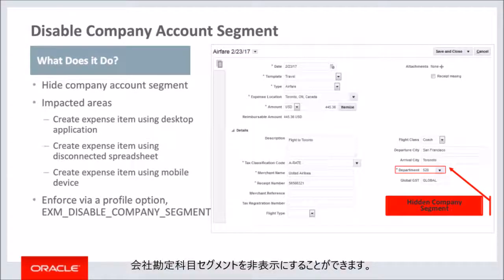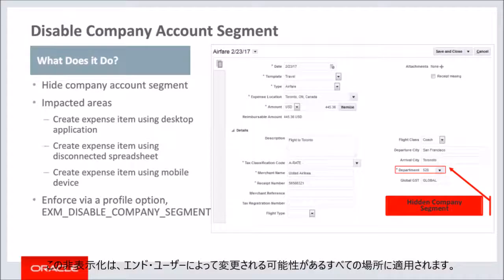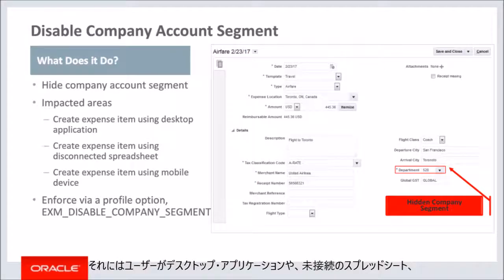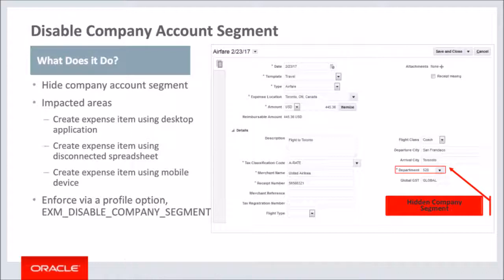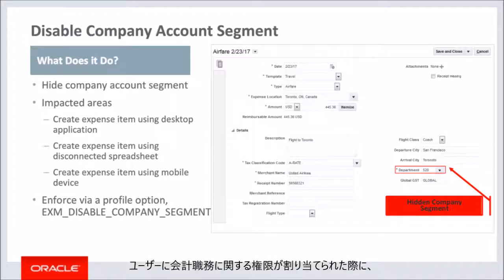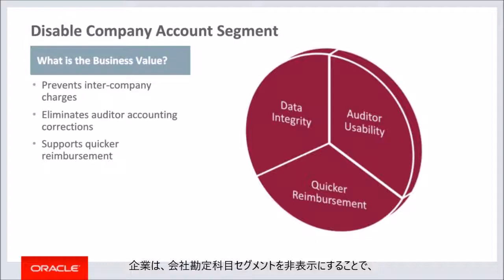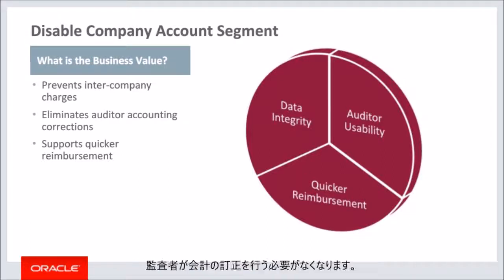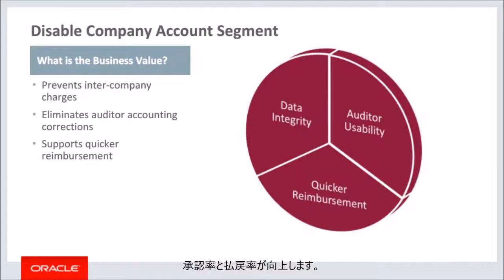Companies that would like to prevent users from updating the company account segment can hide it. The primary reason for disabling the company accounting segment is to prevent intercompany charges. This concealment applies anywhere the company account segment could potentially be updated by the end user — including the desktop application, a disconnected spreadsheet, or via a mobile device. By using the profile option EXM Disabled Company Segment, customers can ensure that the standard company account segment is disabled when a user is assigned the accounting duty privilege. Preventing intercompany charges eliminates the auditor's need to make accounting corrections, increasing the rate of approval and subsequent reimbursement.